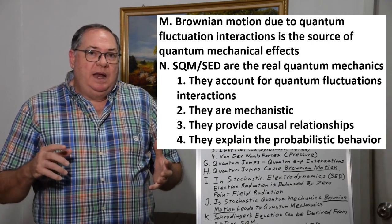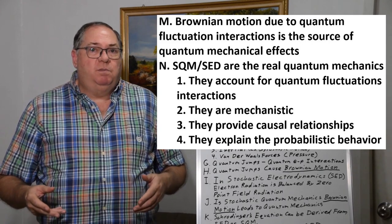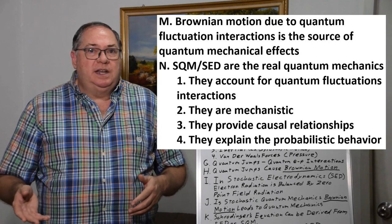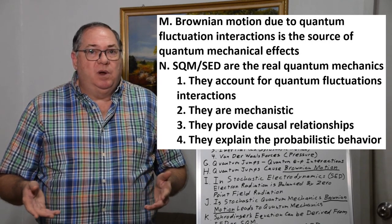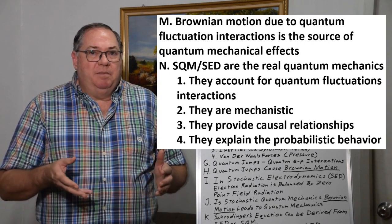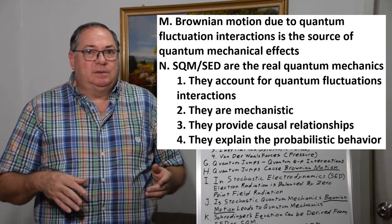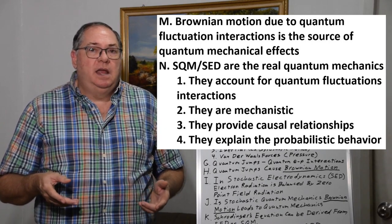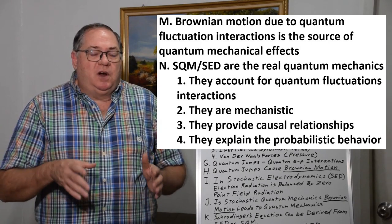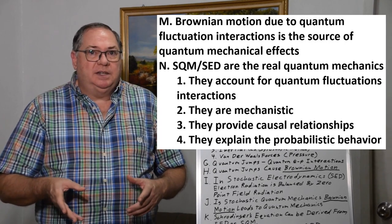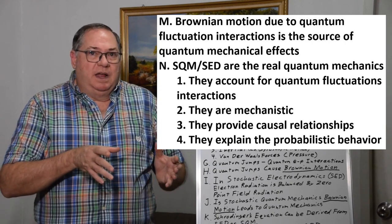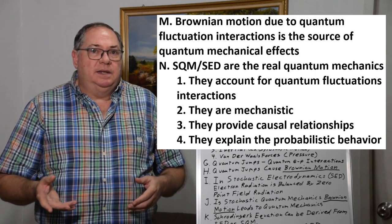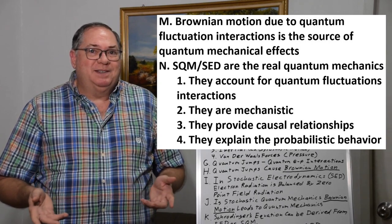That gives you real cause-and-effect relationships that are missing from standard quantum mechanics. Historically, early quantum theorists ignoring the quantum field or zero point field led them to this probabilistic interpretation of quantum mechanics. But if you start with the zero point field and zero point field interactions, you get a more mechanistic version of quantum mechanics that really starts to make more sense.